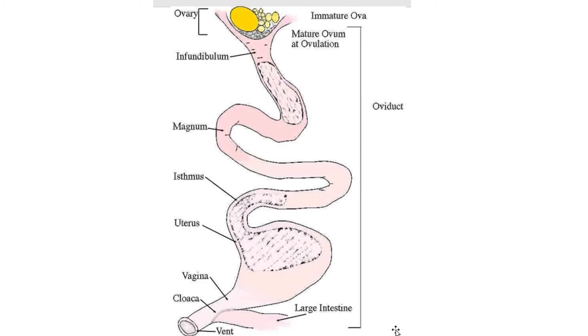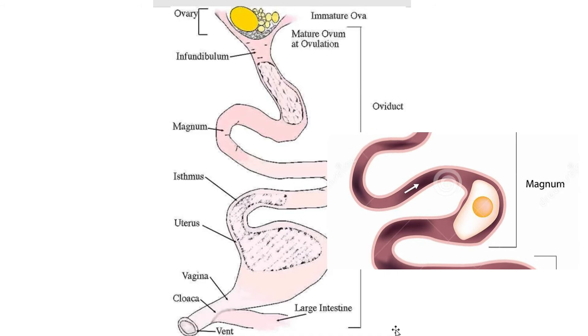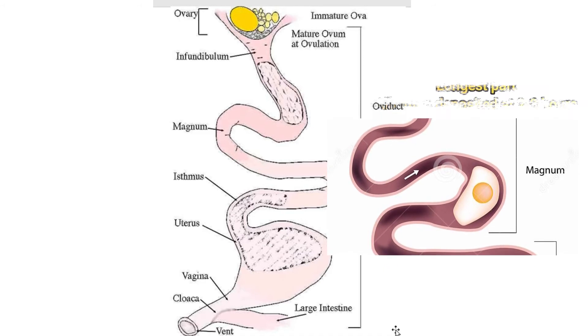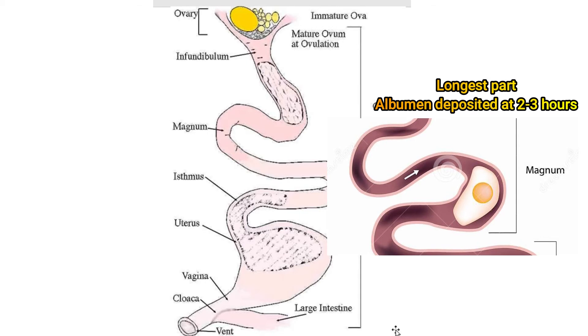Next, we have the ampulla or the magnum, which is the longest part at approximately 40 cm, and it secretes more than 40% of the albumen.